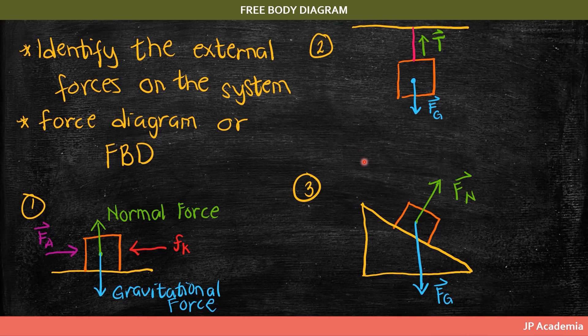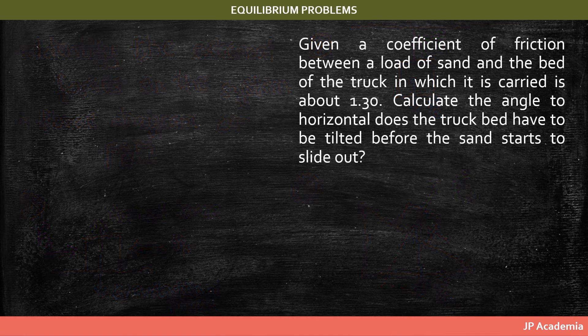For the last free body diagram example, a box sliding down a frictionless incline: we have the normal force perpendicular to the surface and the downward weight of the object.